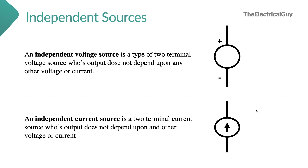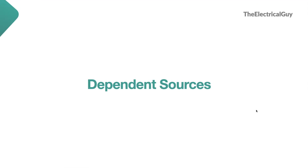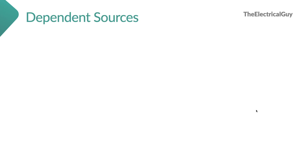Now there is one more type of sources called dependent sources or controlled sources. As the name suggests, the output of these sources depends upon other variables such as voltage or current — or we can say it is controlled by some other variable such as voltage or current. Dependent voltage or current sources behave the same as independent voltage or current sources. The only difference is that in case of dependent sources the output can be controlled by an input voltage or current, which is not possible in case of independent voltage sources.